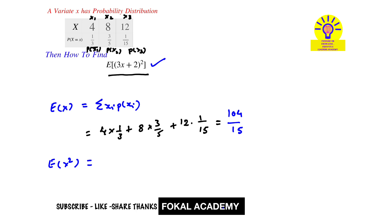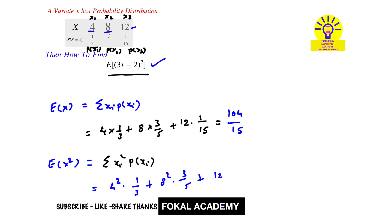Similarly, find E[x²], the mean square value. It equals the sum of xi² times P(xi), which is 4² times (1/3) plus 8² times (3/5) plus 2² times (1/15). Simplifying this gives 160/3. Now we can solve the main expression.